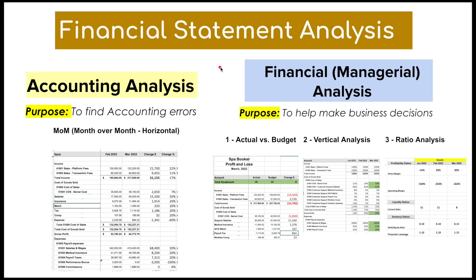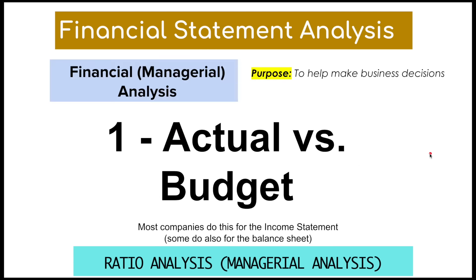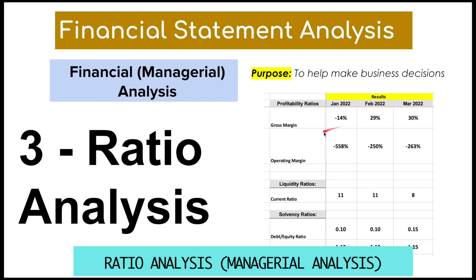Going back to the overview, we've now covered accounting analysis, actual versus budget, and vertical analysis. Now let's look at ratio analysis. Ratio analysis is helpful because it compares two financial figures to each other and gives you the result as a percentage or ratio. The current ratio is a common example — it measures the relationship between current assets and current liabilities. The higher the ratio, the better, because it means you have enough current assets to cover your near-term obligations.